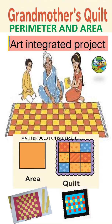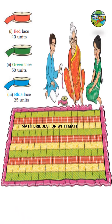Grandmother's quilt is an interesting topic to learn the concept of area and perimeter. Adrit and Priti's grandmother made a quilt using old clothes available at home — quilt meaning razai. Now she wanted to put lace: red lace is 40 units, green lace is 50 units, and blue lace is 25 units. The lace is used on the border, which is known as the perimeter.